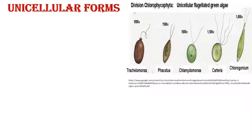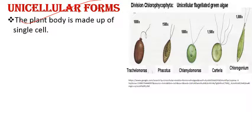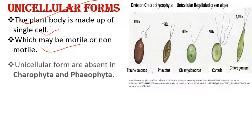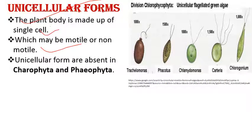Firstly, unicellular forms mean a single cell represents the whole body — the plant body is made up of a single cell. It may be motile or non-motile. In algal classification, two divisions — Charophyta and Phaeophyta (brown algae) — do not have unicellular forms; unicellular forms are absent in these two groups.